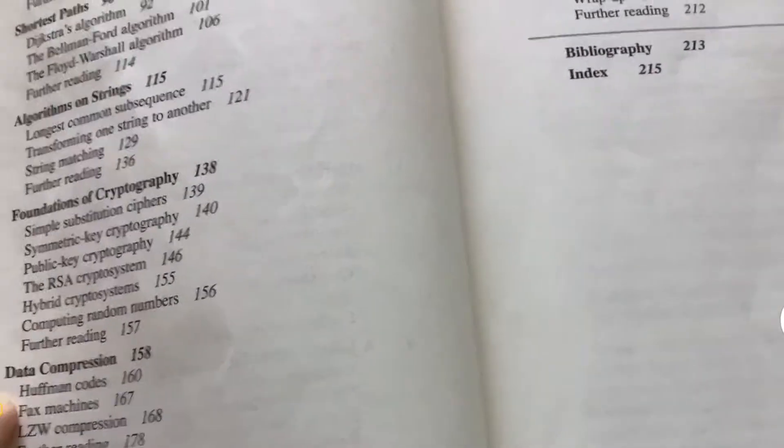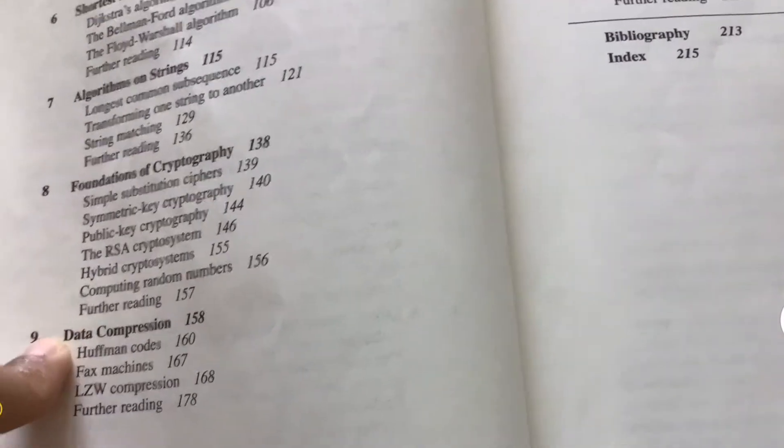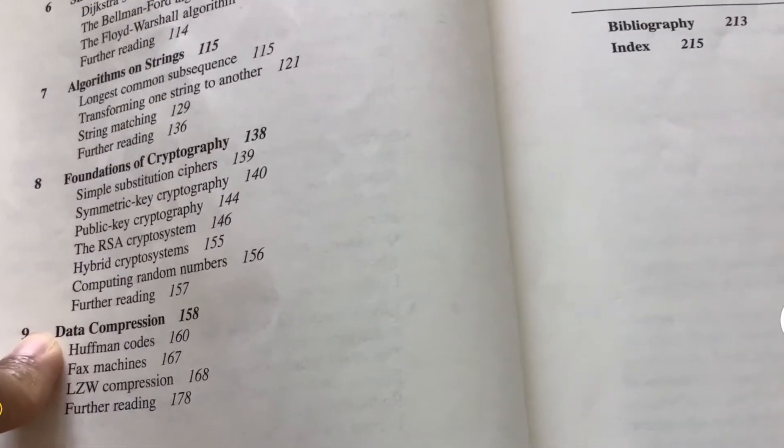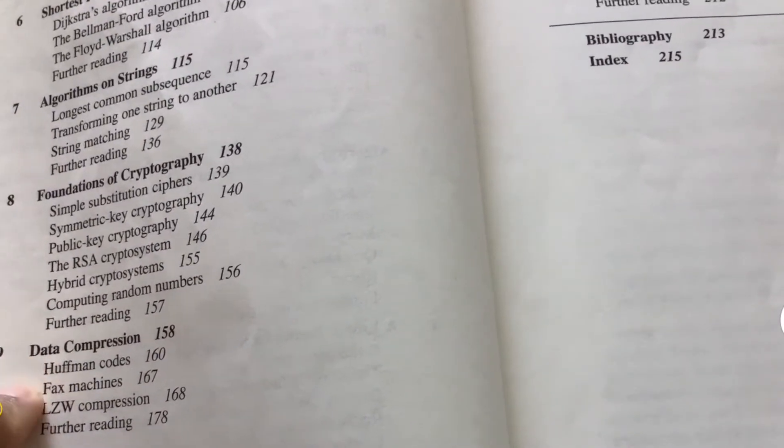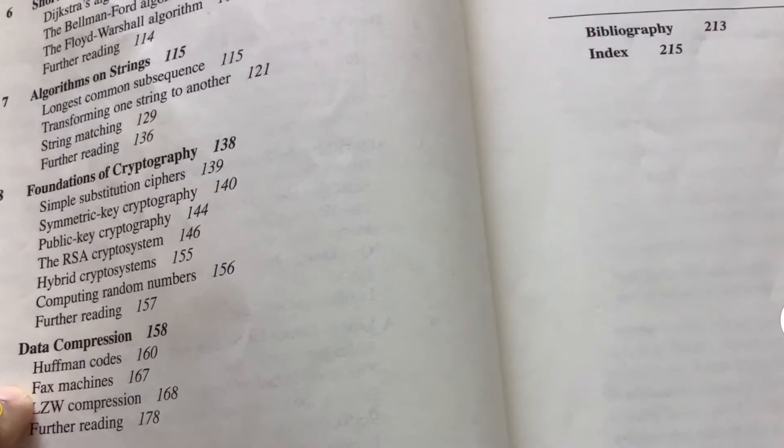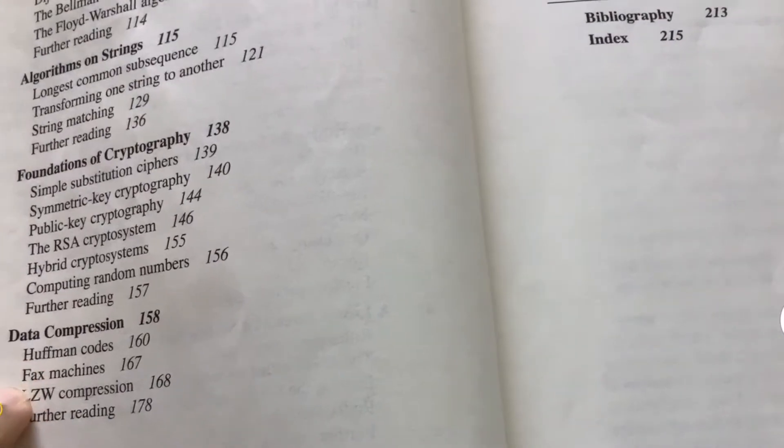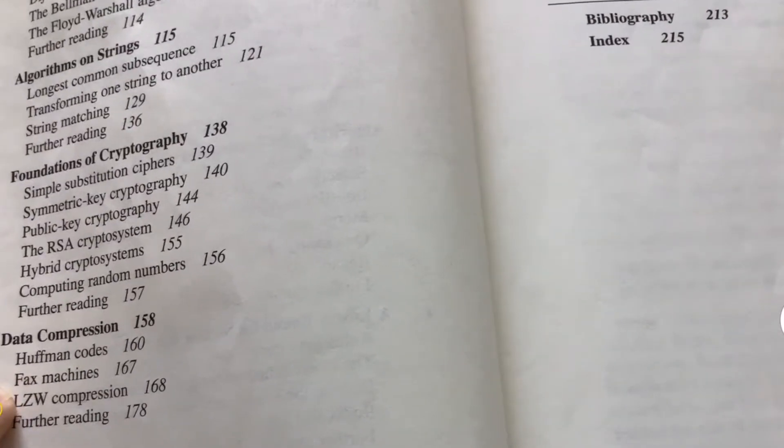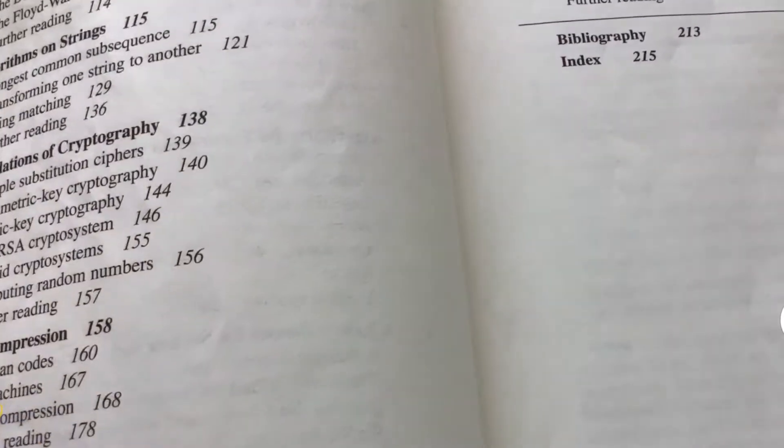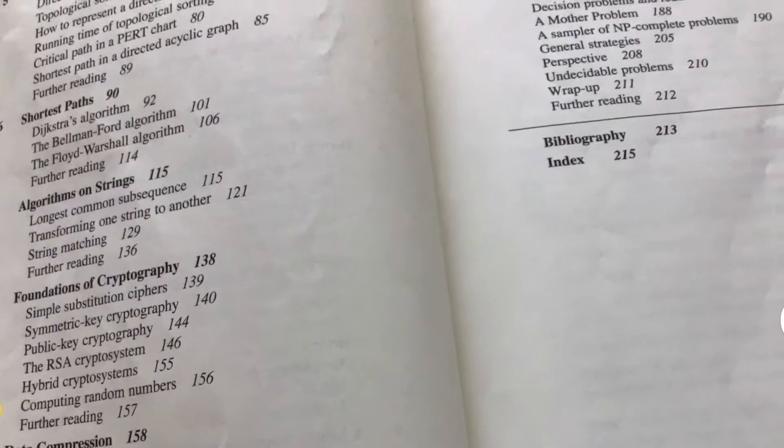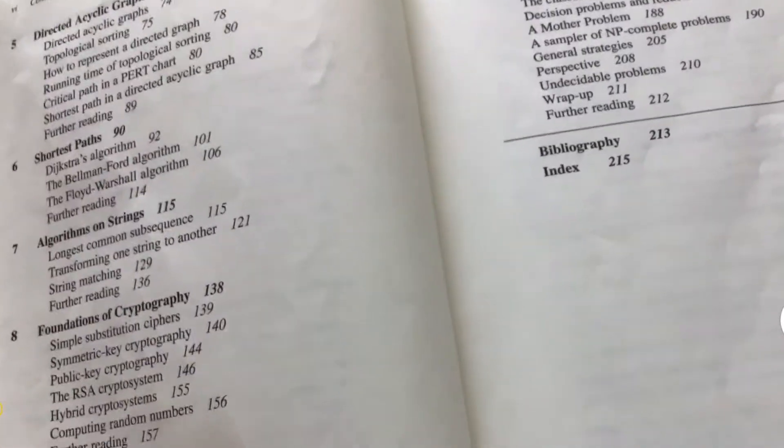Yeah, and then the next one, data compression, the Huffman codes section is great, it's very relevant to coding interviews, to also computer programming, so this section is a great read as well. And then after that, the book describes how fax machines can compress, and then LZW compression. These sections were less interested to me personally, but also, like, especially the LZW compression, I found the explanation in the book not very clear, again. And so, again, I had to supplement it with other materials, so this is just a warning here.